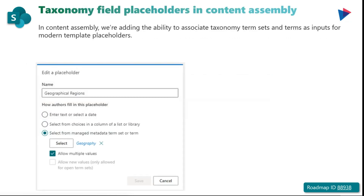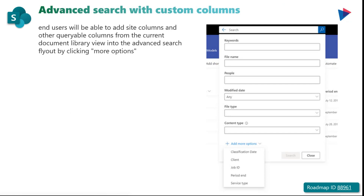In content assembly, we're also adding the ability to associate taxonomy term sets and terms as inputs for modern template placeholders. The next feature is advanced search with custom columns — end users will be able to add site columns and other queryable columns from the current document library view into the advanced search by clicking more options.